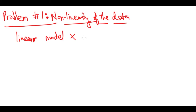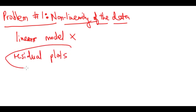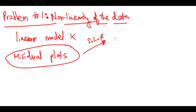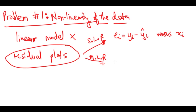To identify non-linearity in the data, we can use residual plots. In simple linear regression, residual plots are created by plotting the residual ei — which is yi minus the estimate — versus xi, the predictor value. In multiple linear regression, you plot the residual ei versus the fitted values yi-hat.